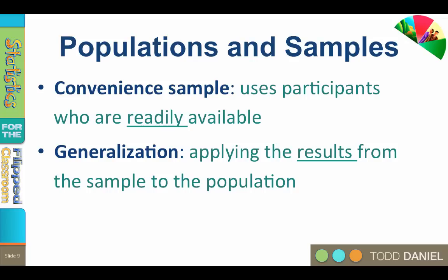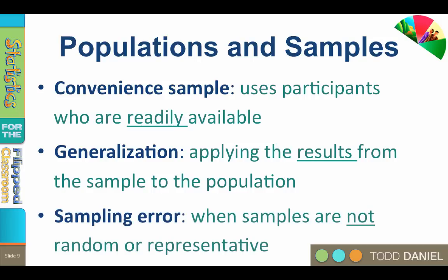One joke goes that psychology is the scientific study of college sophomores. Overstated, yes, but something to keep in mind when we are using convenience samples. Convenience samples are more likely to lead to sampling error, and sampling error occurs when samples are not random or representative. Sampling error happens when we ask too many of the same people, or we ask the wrong people.